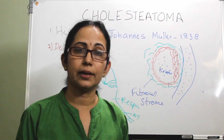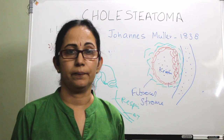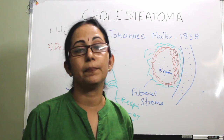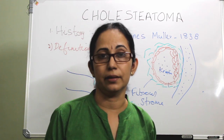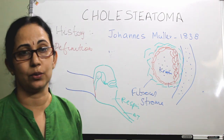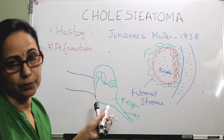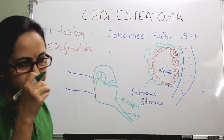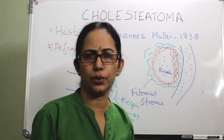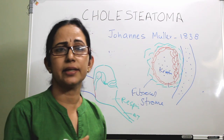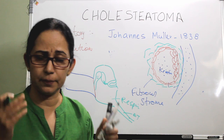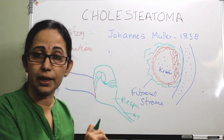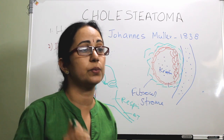So if stratified squamous epithelium appears within the middle ear — or in other areas such as the temporal bone, intratemporal sites, or extratemporal areas like the petrous apex or the cerebellopontine angle — it acts like an intruder, causing significant problems.